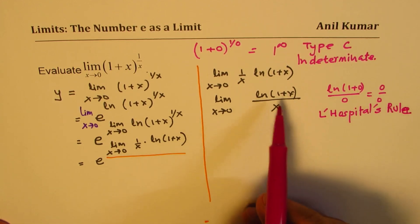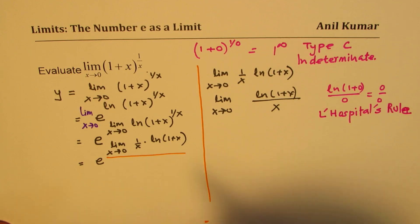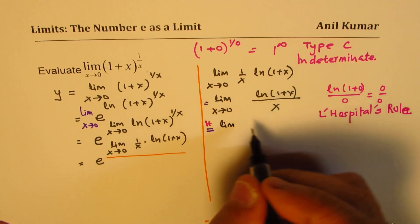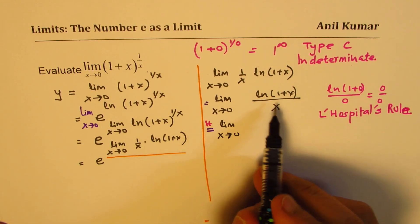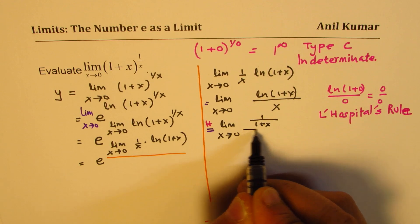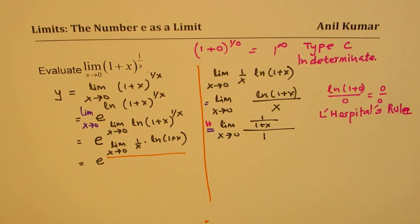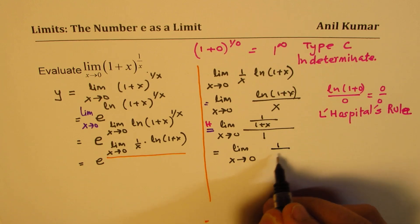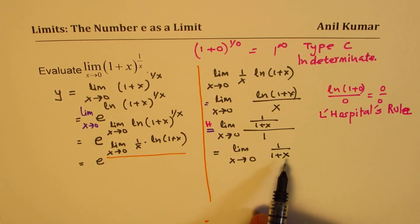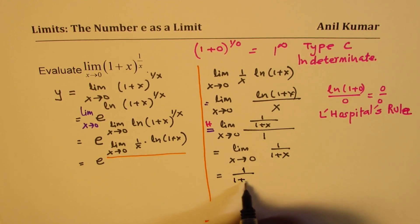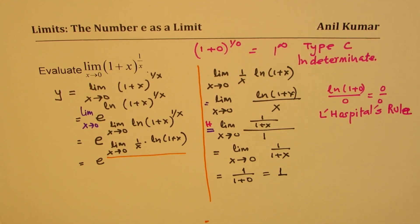Applying L'Hôpital's rule means the limit equals the limit of the derivatives of numerator and denominator. The derivative of ln(1 plus x) is 1 over (1 plus x), and the derivative of x is 1. So we get limit x approaches 0 of 1 over (1 plus x). Substituting 0, we get 1 over (1 plus 0), which is 1.